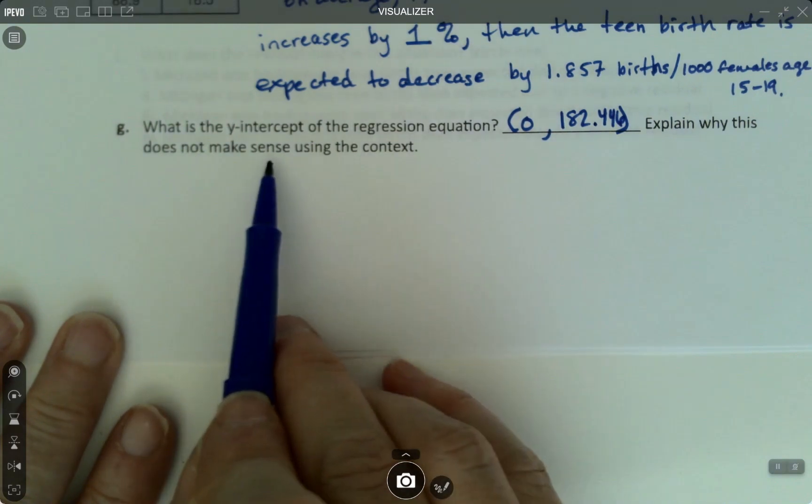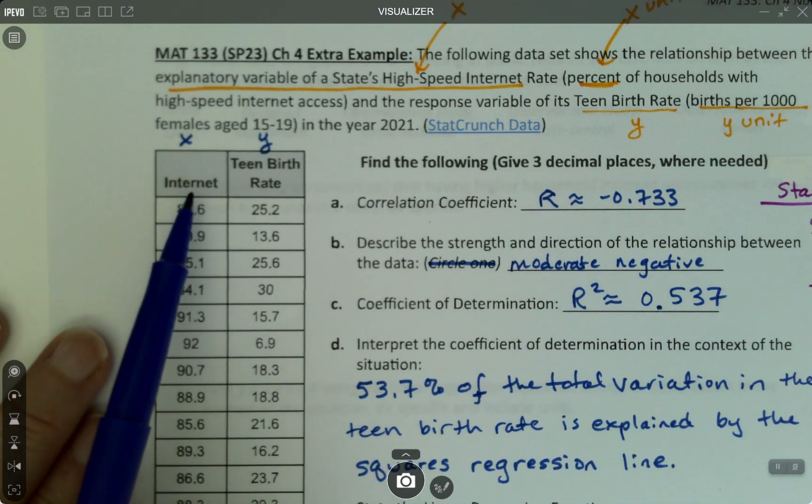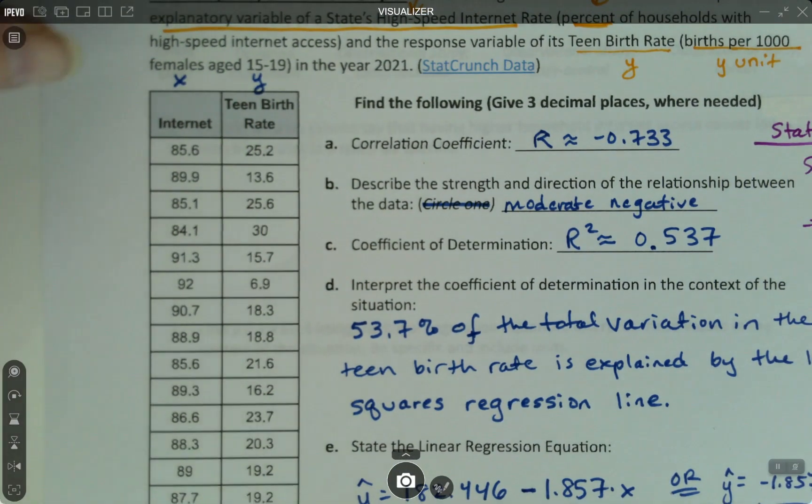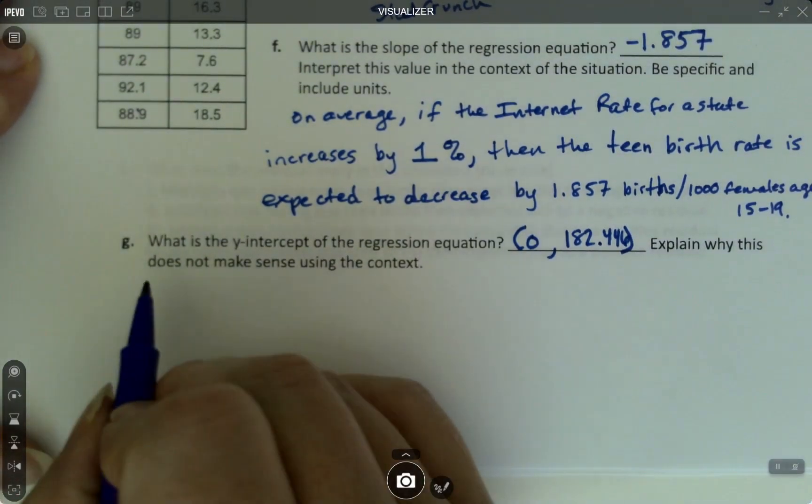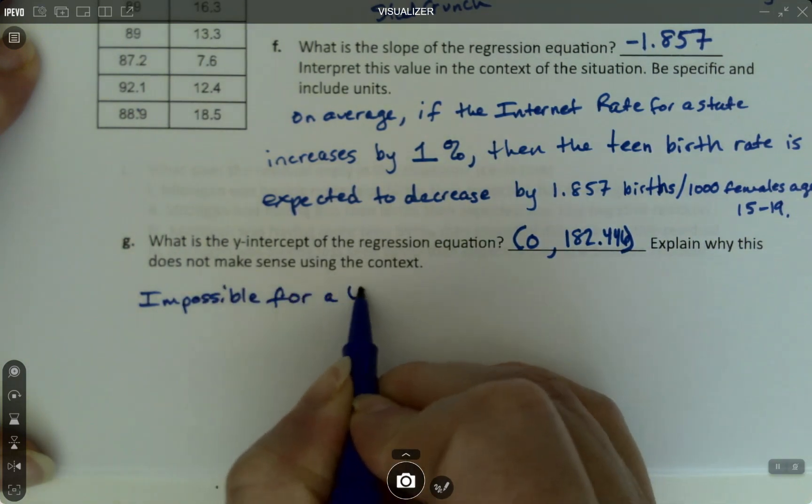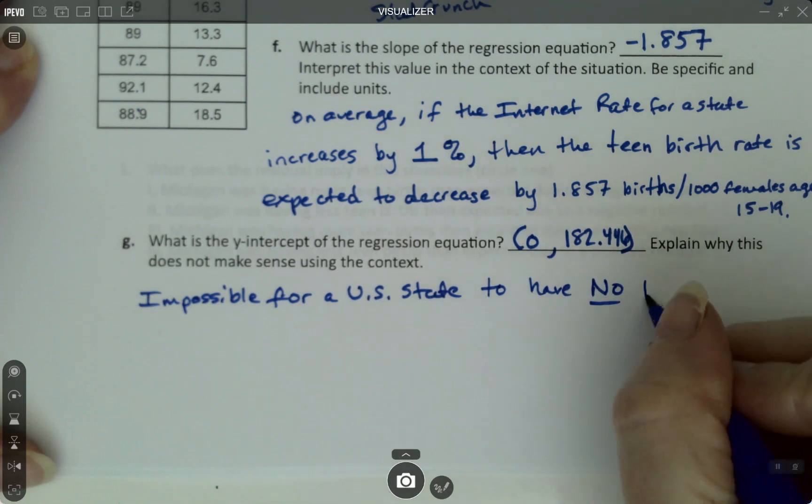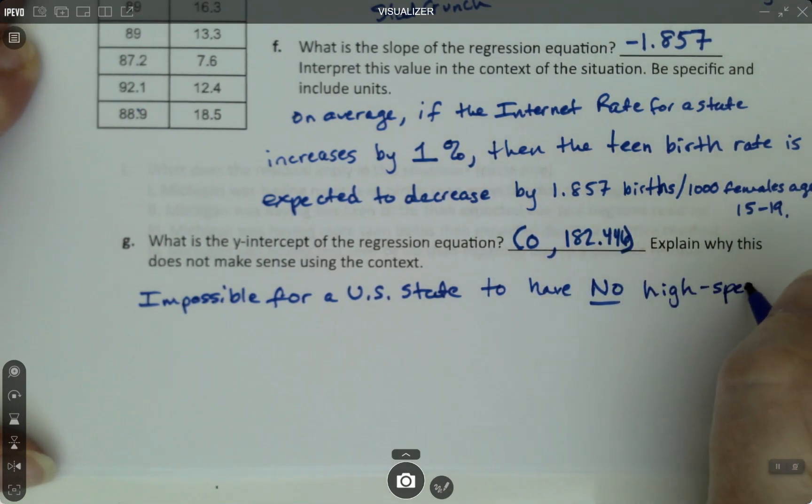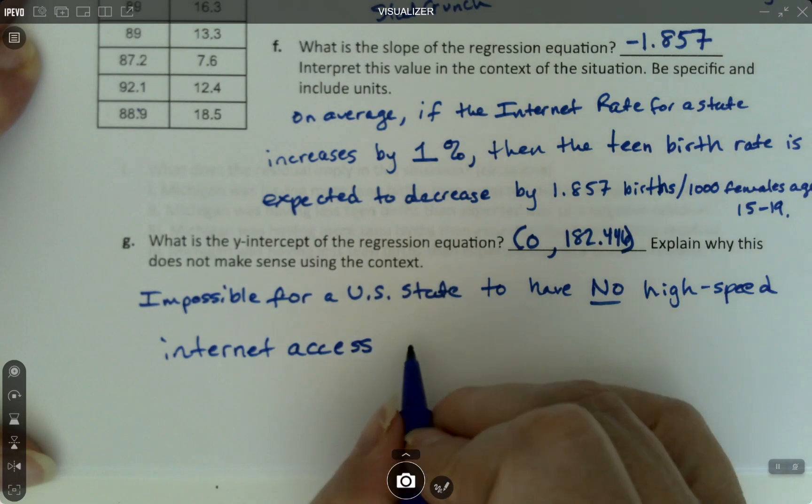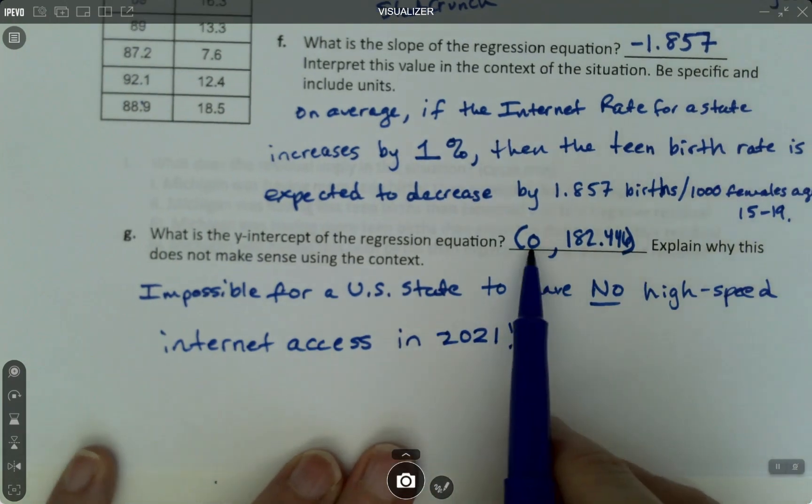Now, this doesn't make any sense. And the reason it doesn't make sense is actually the zero. Zero was the internet rate, the high-speed internet rate for a state in the U.S. in 2021. And as we can plainly see, even though this is a sample of states, this is obviously not possible. So, it's impossible for a U.S. state to have no high-speed internet access for the whole state in 2021. No high-speed internet because that's what zero stands for. X equals zero.